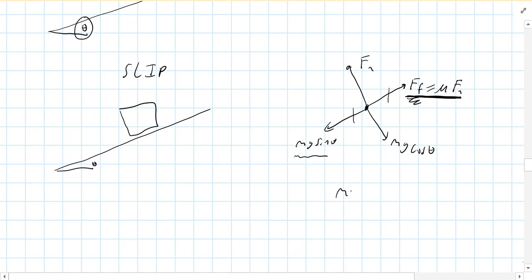So at that moment, Mg sine theta is going to equal friction, which is mu Fn, which is mu, and in this problem Fn equals Mg cosine of theta. Well, hey, look at this, the M's and the G's drop out of both sides and you get mu is equal to sine of theta over cosine of theta, otherwise known as tangent of theta. So when your angle reaches whatever value this is, if you're given a mu of 0.3, if you do inverse tangent of that, you get an angle. If your incline is that angle or bigger, the box will begin to slip down the incline. So that's slip.